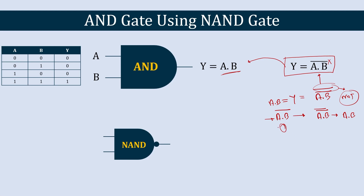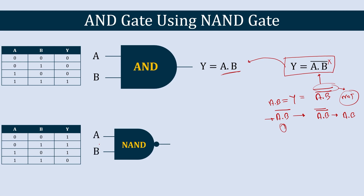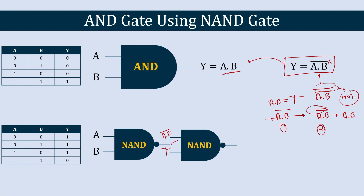In the first step we have a NAND gate with inputs A and B, giving output (A·B)̄. In the second step, we feed that output into another NAND gate with both its inputs shorted together — this acts as a NOT gate — and the final output is A·B. That is how we create an AND gate using two NAND gates.